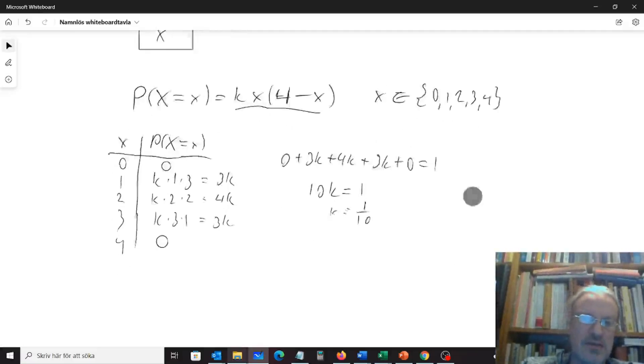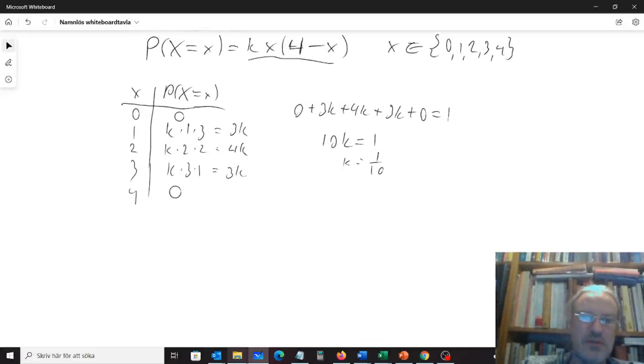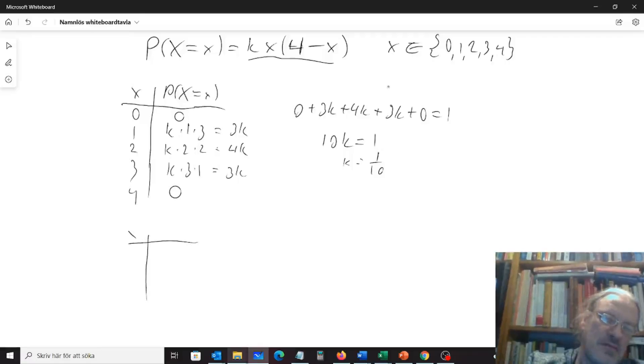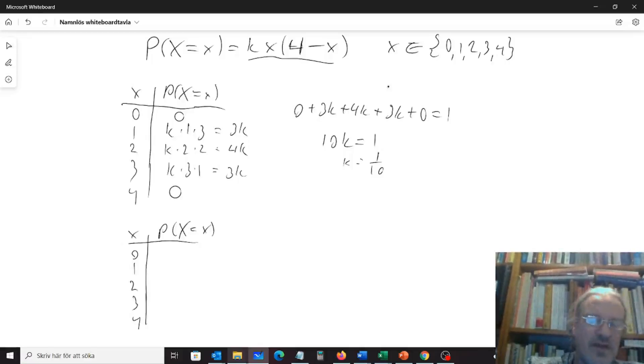And that allows us to be able to draw the complete table here. Probability that X equals x, 0, 1, 2, 3, 4. So that will give us here 0, and 0 that. And this will give us 3 times k, so that is 3 tenths.